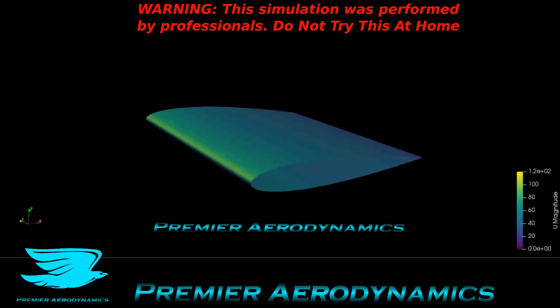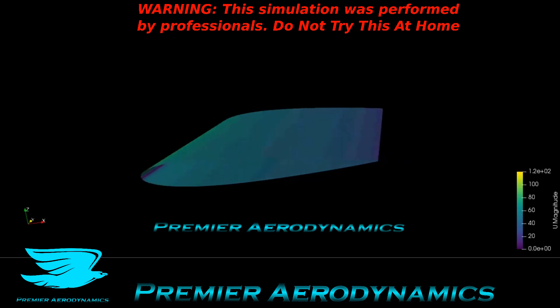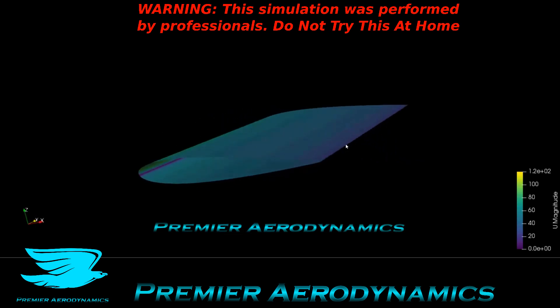This is the velocity distribution over the surface. Technically this isn't the velocity on the surface itself because the velocity is zero at the surface due to surface roughness, but this is the velocity in the first cell mapped onto the surface. Orbiting around, the velocity ranges from 0 to 120 meters per second. Interestingly, the fastest velocity is almost at the leading edge on the top surface, and it decelerates as it goes towards the trailing edge.